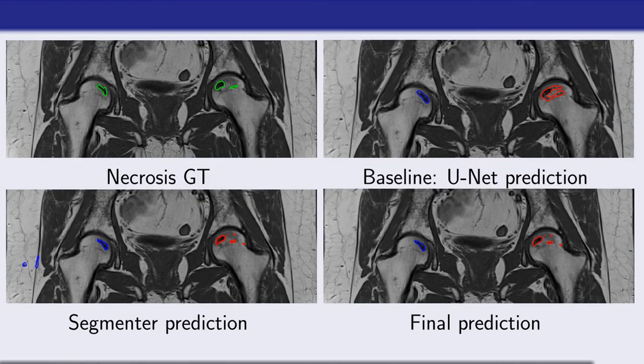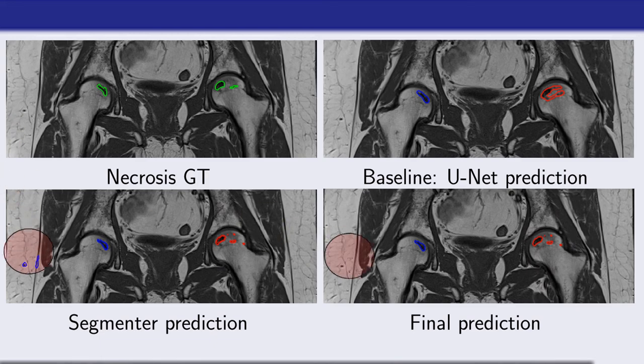Here we can see a well-cherry-picked example prediction on our test data slice from our architecture in comparison to a U-Net baseline. It is noticeable that the U-Net tends to overestimate the necrotic area, whereas the segmenter branch output seems to have a more precise boundary estimation, which is propagated to the final prediction. Also, the fusion with the topographical branch seems to get rid of outlier segmentations.